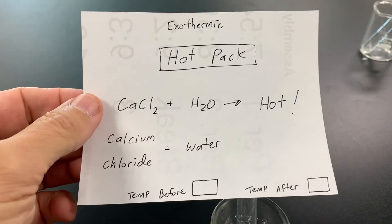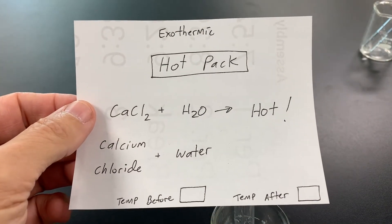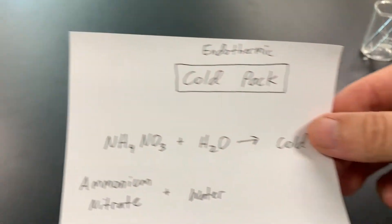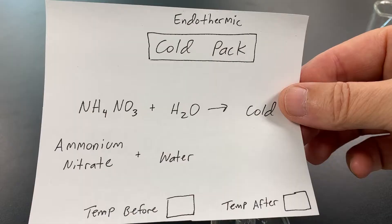In this experiment, I'm going to show you two different types of chemical reactions. First, I'm going to show you a hot pack, which is a chemical reaction that's called an exothermic reaction. Then, I'm going to show you what's called an endothermic reaction, or a cold pack. Let's get started.